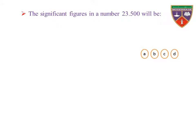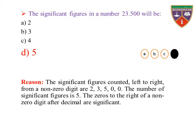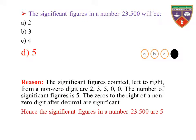The significant figures in the number 23.500 — option A: 2, B: 3, C: 4, D: 5. The key is 5, correct option is D. Reason: the significant figures counted left to right from a non-zero digit are 2, 3, 5, 0, 0. The number of significant figures is 5. The zeros to the right of a non-zero digit after the decimal are significant. Hence, the significant figures in 23.500 are 5.